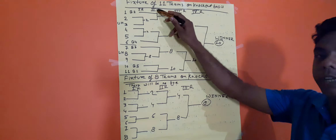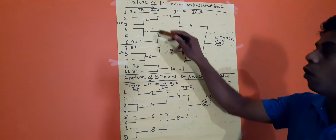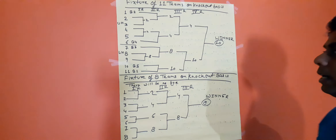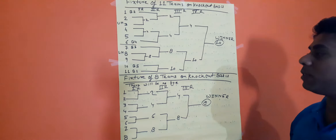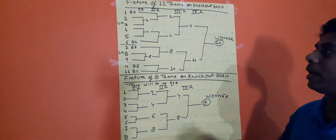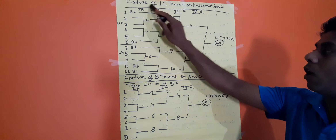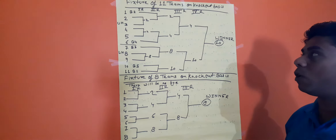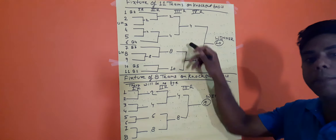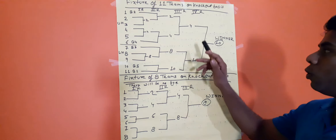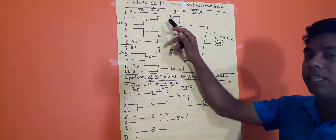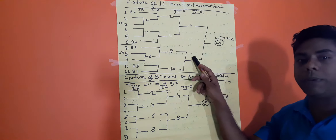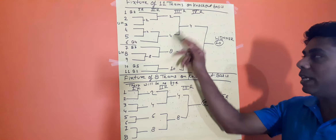Only using this method, you can make the fixture for various numbers of teams like 20 teams, 25 teams, 30 teams, or 100 teams — however many teams are participating. This way, no one can object to the fixture, and you can fix the number of matches and number of rounds for teams participating on a knockout basis, so all teams participate smoothly.